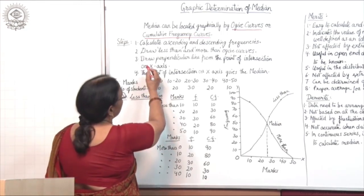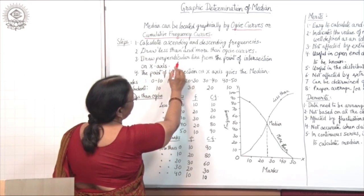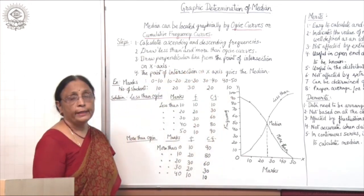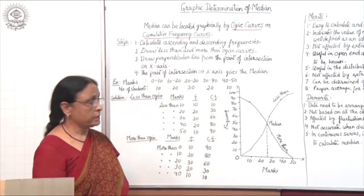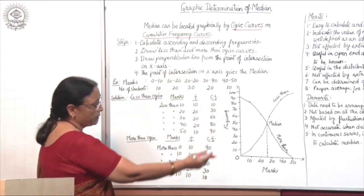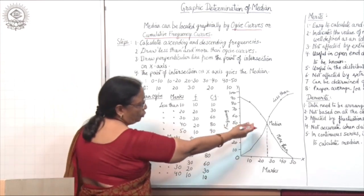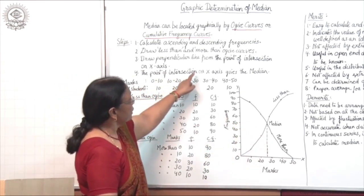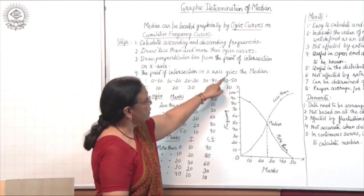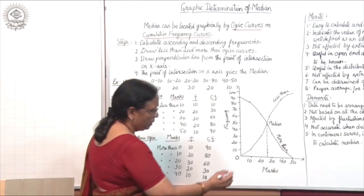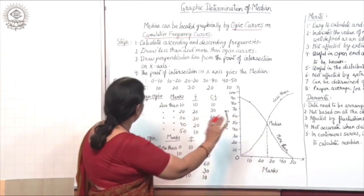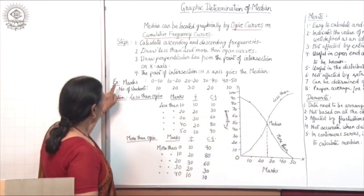The third step is to draw a perpendicular line from the point of intersection on the X axis. The point of intersection projected on the X axis gives the median. I will explain this with an example.